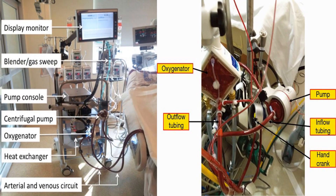In this picture, the two most important components of the ECMO circuit are the pump and oxygenator. The deoxygenated blood is taken by the pump and pushed to the oxygenator, where it becomes oxygenated and returns back to the patient. There is also the sweep gas, pump console, and heat exchanger, all of which will be explained later.